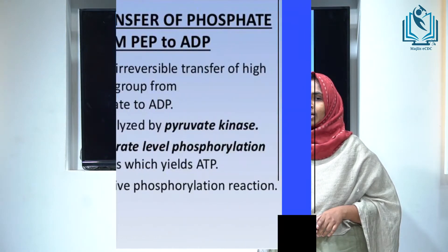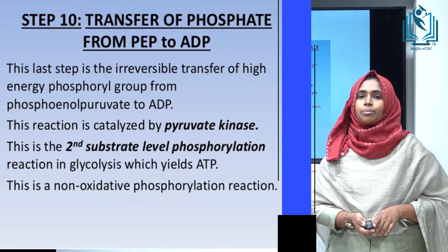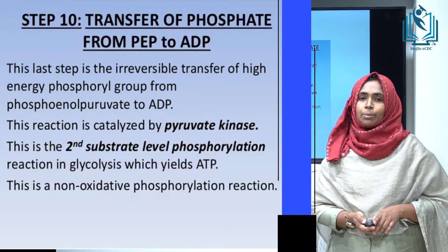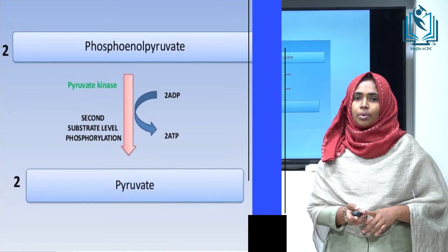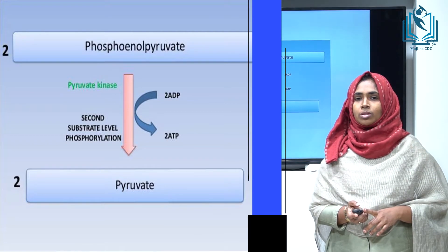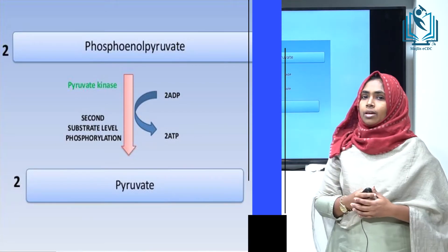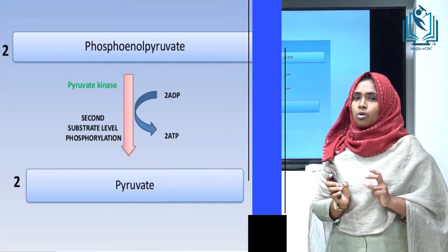Step ten is the last step of glycolysis. Phosphoenolpyruvate is converted into pyruvate by the enzyme pyruvate kinase. The phosphate group from phosphoenolpyruvate is transferred to ADP, producing one molecule of ATP via substrate-level phosphorylation. Since two molecules of glyceraldehyde-3-phosphate undergo this reaction, two molecules of pyruvate and two molecules of ATP are produced at this step.